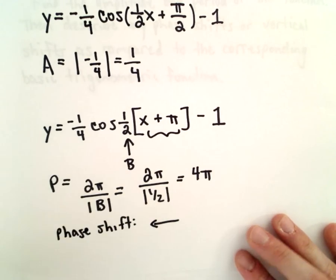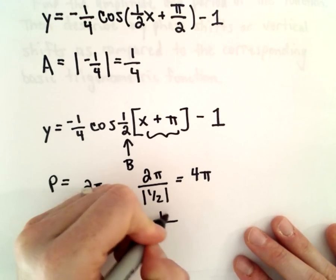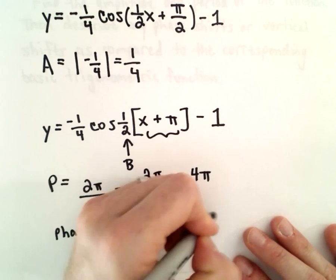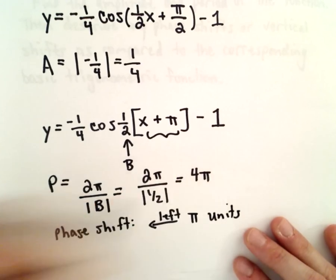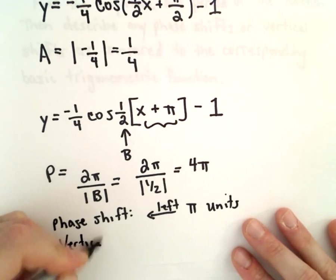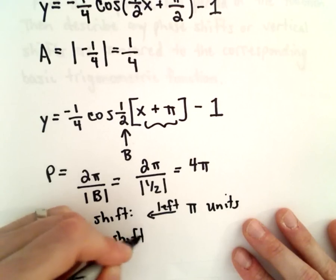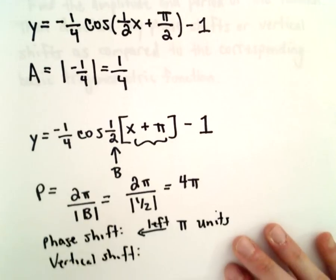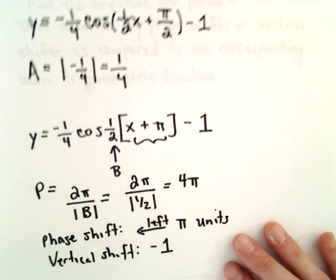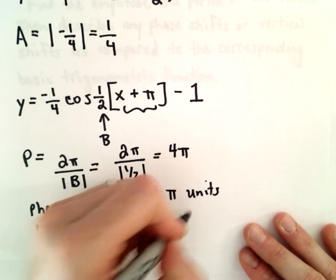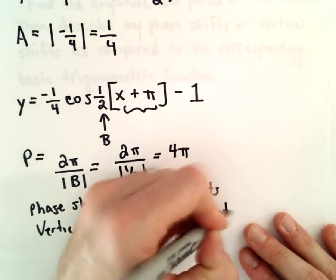It's going to be shifted to the left pi units. And then the vertical shift. In this case, since we have a minus one out there, the vertical shift will equal negative one, or it will be one unit downwards.